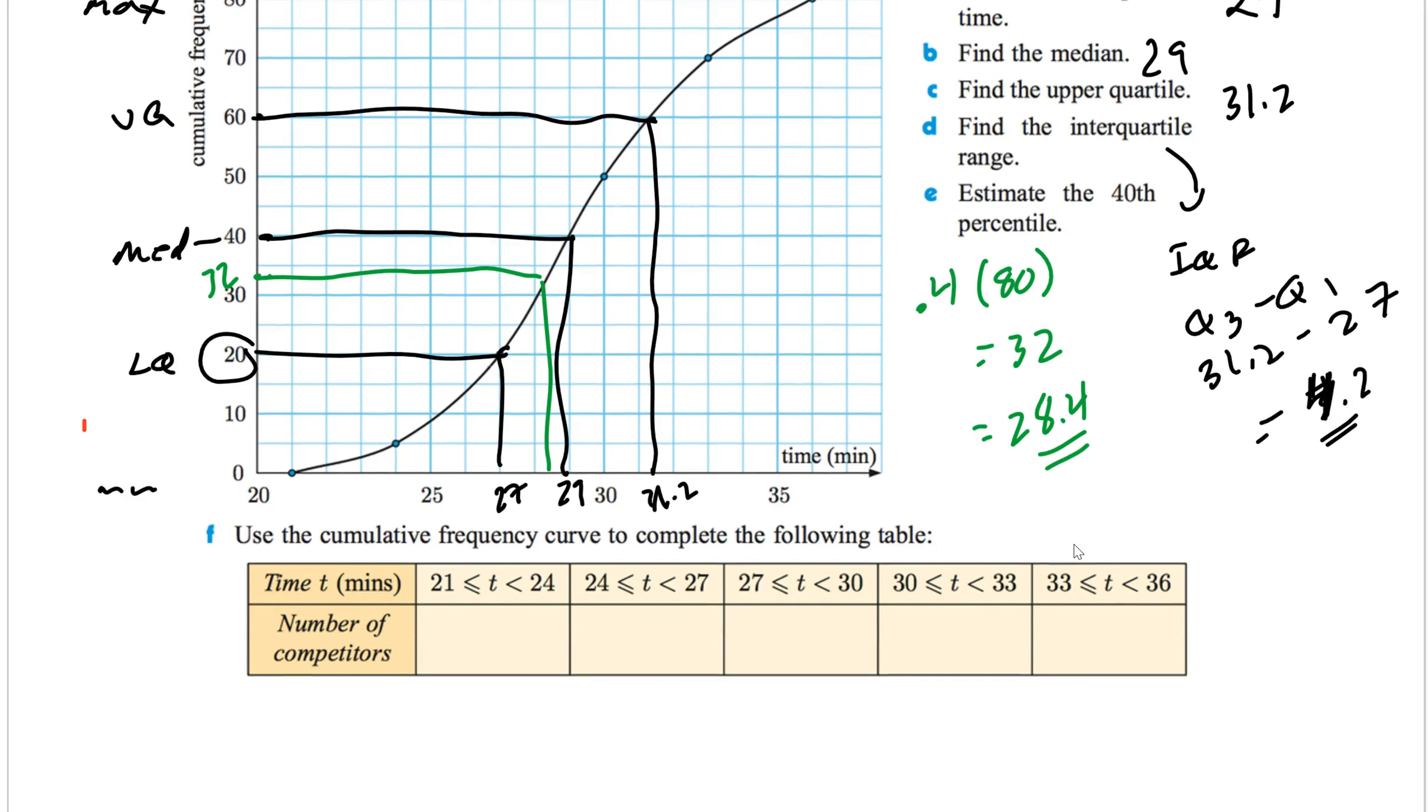Now, the last part of this people have trouble with, for some reason, is this right here. They want you to fill out the following table. So the way this works is actually, it's not that bad. You just go 21. So 21 right here. If you look at 21, you're at 0. So this is 0. Then we go to 24, which is right here. And that's at 5. So the number of people that went between 0 and 24 is just 5.